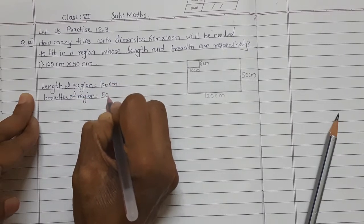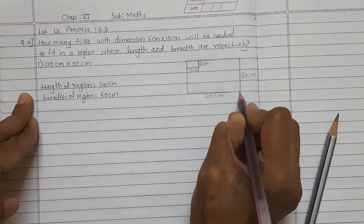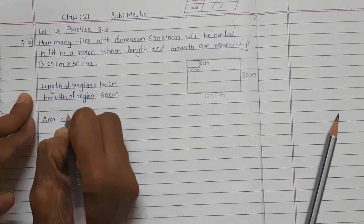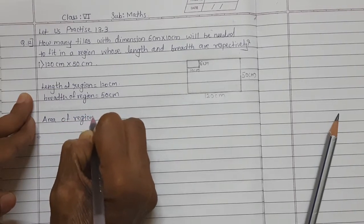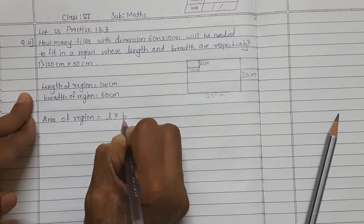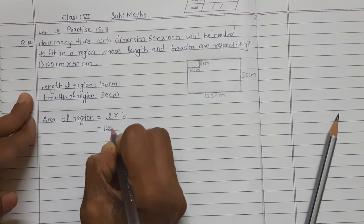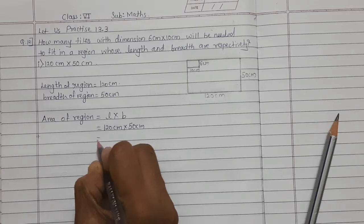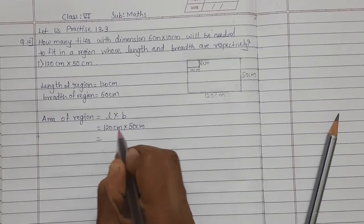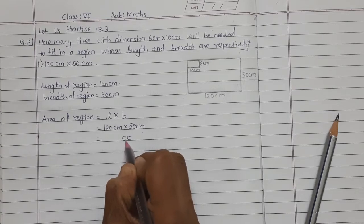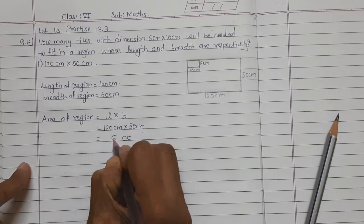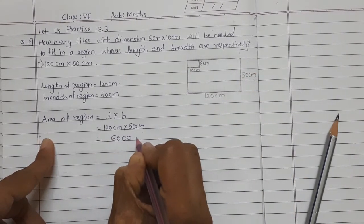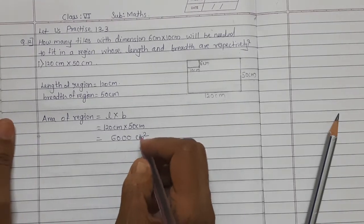Length is 120 centimeter and breadth is 50 centimeter. Area of region is equal to length multiplied by breadth, so 120 centimeter multiplied by 50 centimeter. Let's calculate: count the number of zeros — one here, one here — so write two zeros first. 12 fives are 60, so the area of this region is 6000 square centimeter.